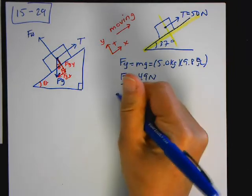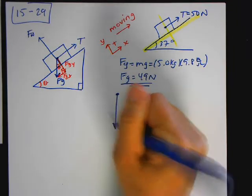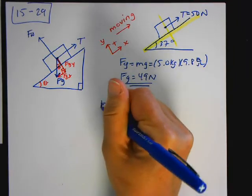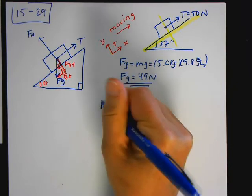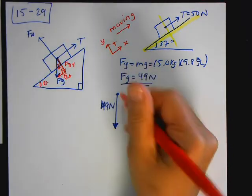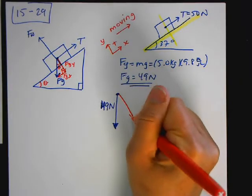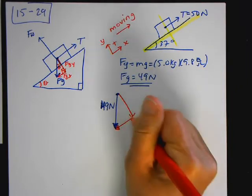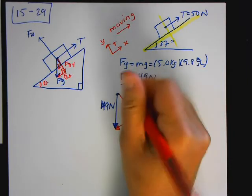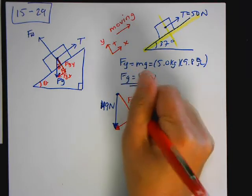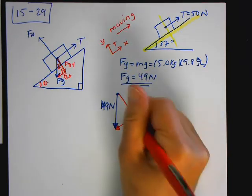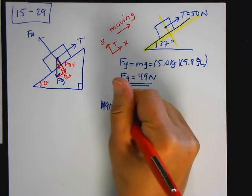Now I'm going to draw my F of G. It goes down like this. I'm just going to do a little bigger. So I know this now is 49 newtons. Now again, my components are head to tail. The direction of these arrows are important. So this is FGY. This is FGX. They're always perpendicular, and now this is my 37 degree angle.